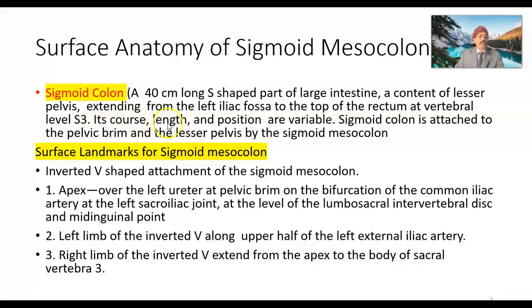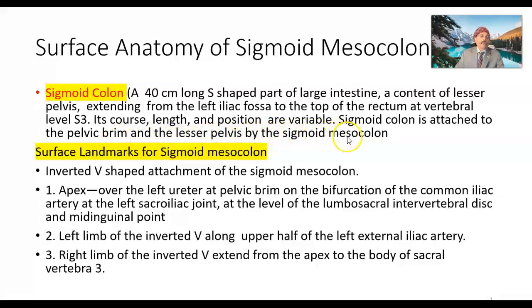Its course, length, and position are variable. The sigmoid colon is attached to the pelvic brim and the lesser pelvis by the sigmoid mesocolon.